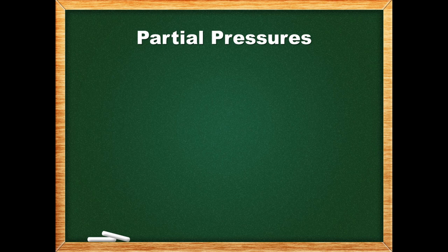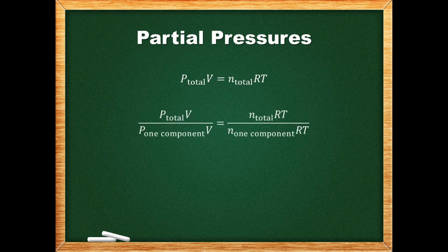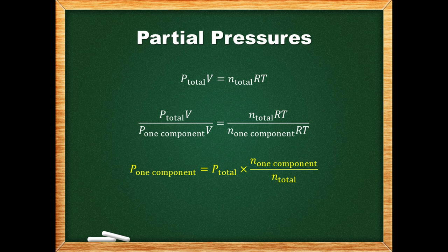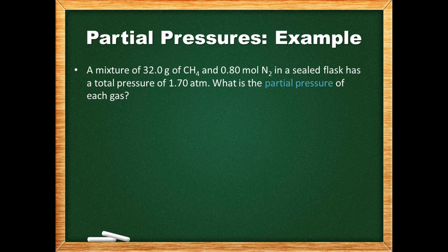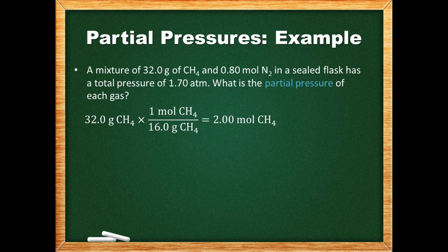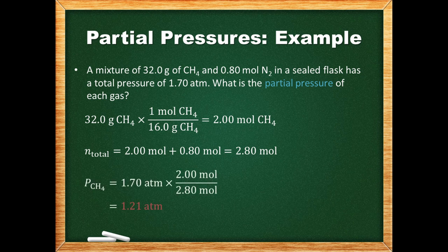Before doing part B, there's another useful concept derivable from the ideal gas law. Whether we write the ideal gas law for a total mixture or an individual gas component it has the same format, so dividing the equation for all gases by the equation for a single gas gives us — after canceling volume, temperature, and R — a simple expression: the partial pressure of a gas equals the total pressure multiplied by the mole fraction of that gas. For example, with 32 grams of methane and 0.8 moles of nitrogen at a total pressure of 1.7 atm, we use the molar mass of methane to find moles, then multiply the total pressure by each gas's mole fraction to get the partial pressures.